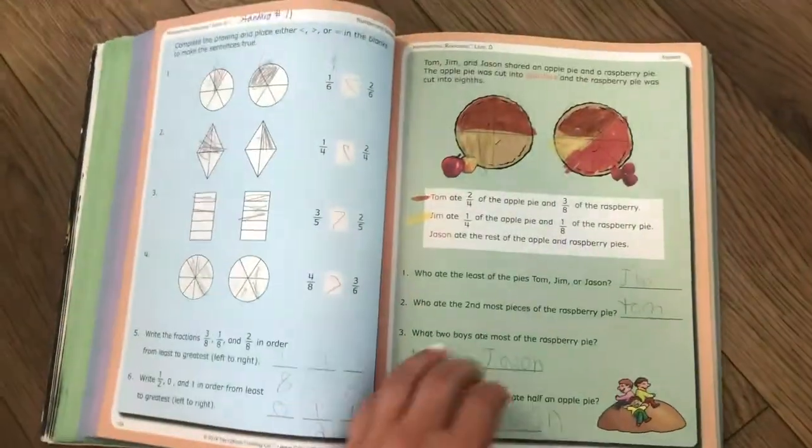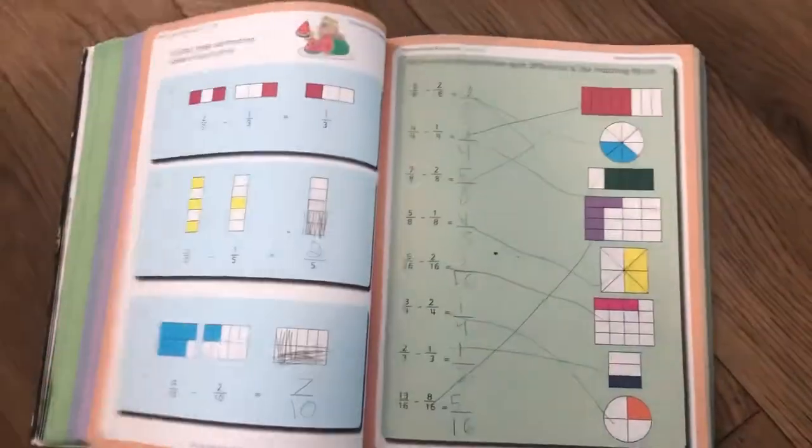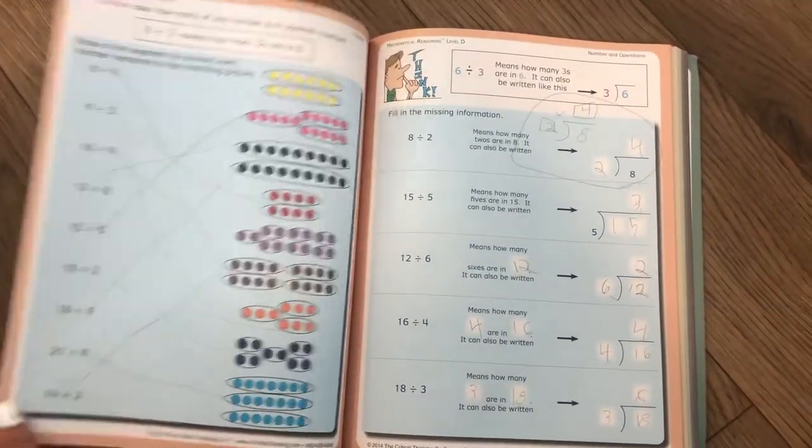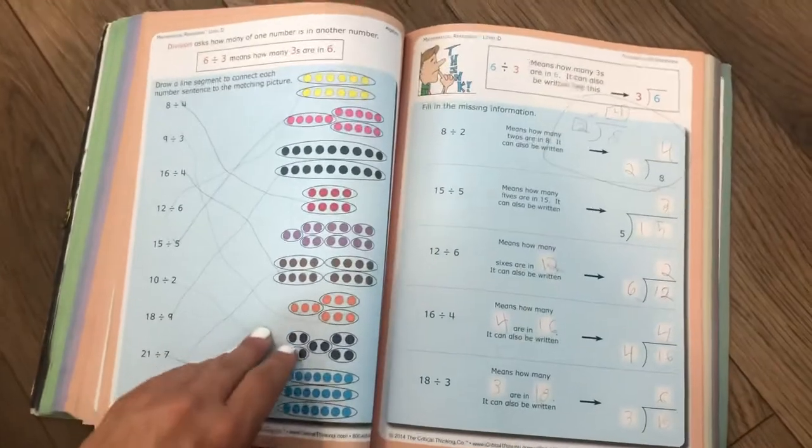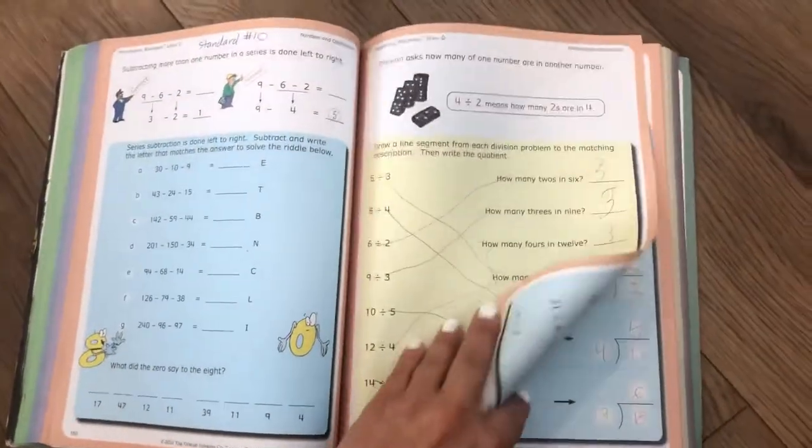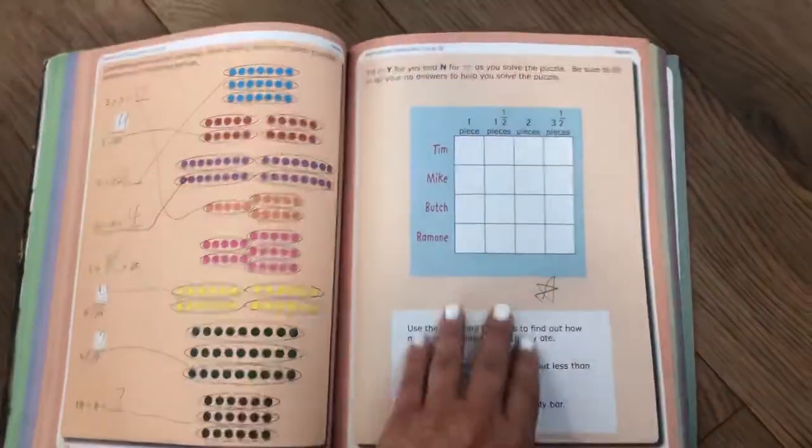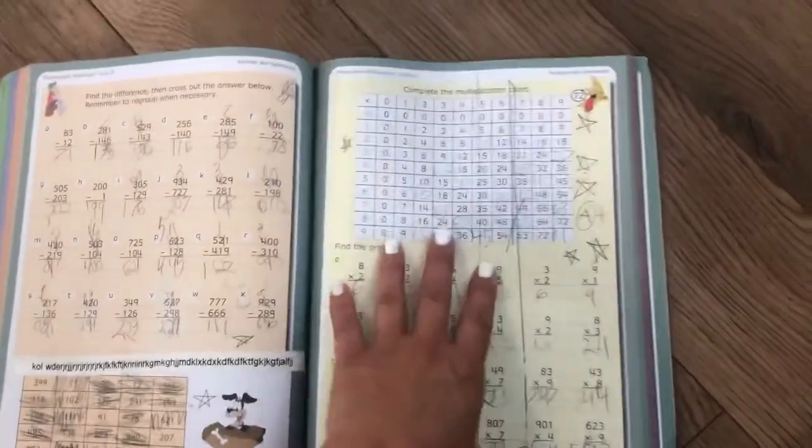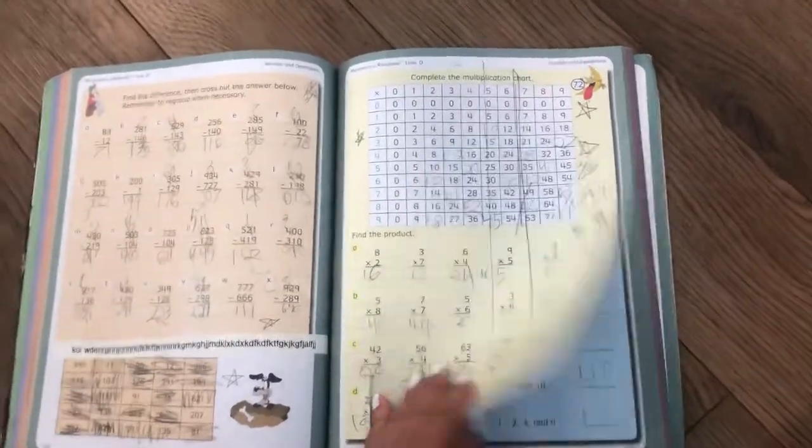As you can see, some pages that I knew would be more difficult because there was a lot of problems, I maybe would skip a couple and add a fun page in there to give them a good variety. Like, this is matching. That would be much easier than a page where there was a lot of adding and subtracting or something like that that took longer. I would space this out. If we did this, we would not do many more that day.